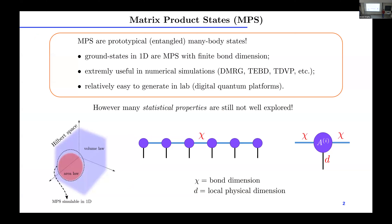We start from the very beginning. Matrix product states, which you probably know very well, are quite famous and are prototypical entangled many-body states. They have nice properties: you can prove they represent ground states in 1D, and they are extremely useful for numerics in practice — DMRG, and so on. Also, as we learned, they are very easy to generate in lab on digital quantum platforms.